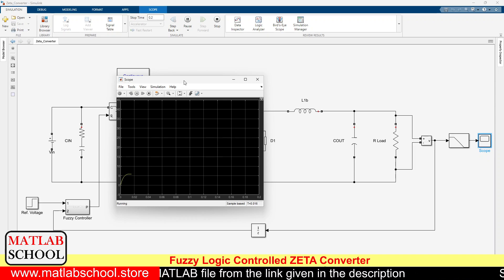So the advantage of ZETA converter is we can get any voltage in between zero and some higher value. The voltage can go below the supply voltage also, it can go above the supply voltage. So it will be acting just like a buck-boost converter.